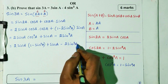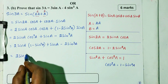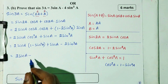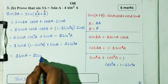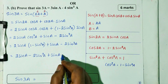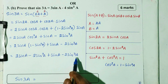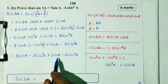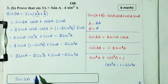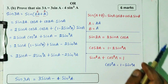Next step: multiply. 2 sin A plus into minus minus 2 sin squared A. Minus 2 sin cubed A. Plus sin A. Combining terms: we get 3 sin A minus 4 sin cubed A, which equals the right-hand side. Hence proved.